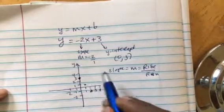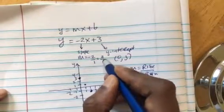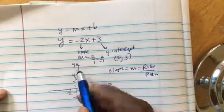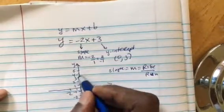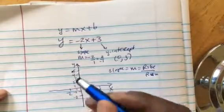Or if you put the negative at the bottom, that would be 2 over negative 1. So that means we go up two points: 1, 2, which takes us to 5, right, 1, 2. And then we run 1 to the left, which takes us to negative 1. So you can also do that.